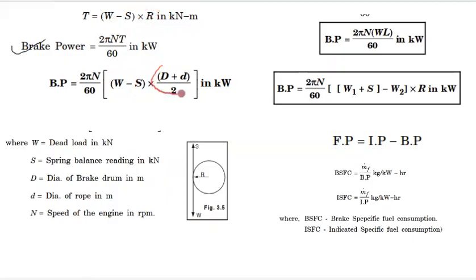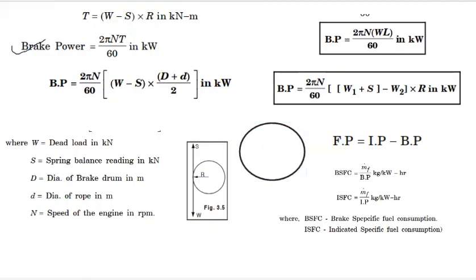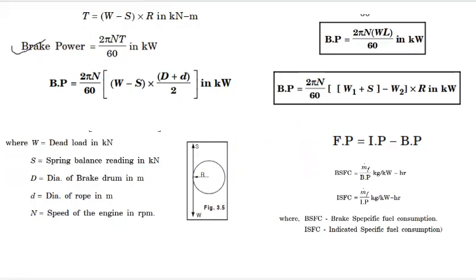The radius R equals D plus d divided by 2, where D is the diameter of the drum and d is the diameter of the rope. Normally, if you have the diameter D, the radius is D by 2. In a rope brake dynamometer, there is a drum and a rope. The effective radius is D plus d divided by 2.